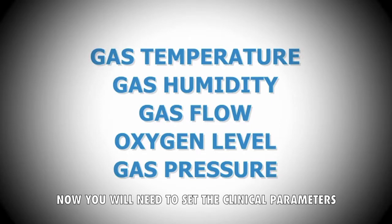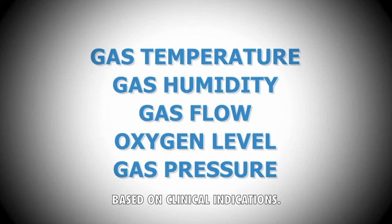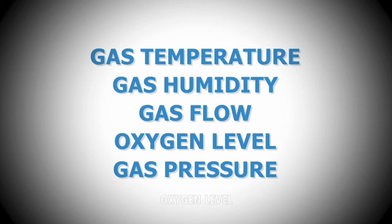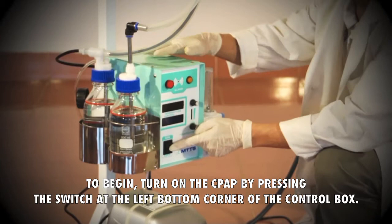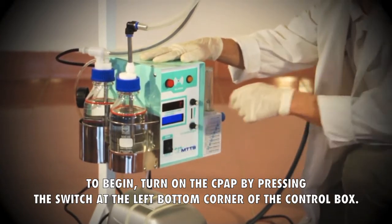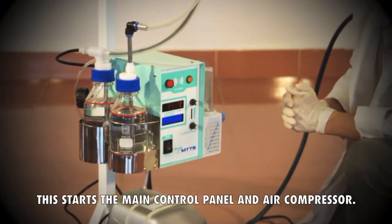Now you will need to set the clinical parameters based on clinical indications. These parameters are gas temperature, gas humidity, gas flow, oxygen level, and gas pressure. To begin, turn on the CPAP by pressing the switch at the left bottom corner of the control box. This starts the main control panel and air compressor.